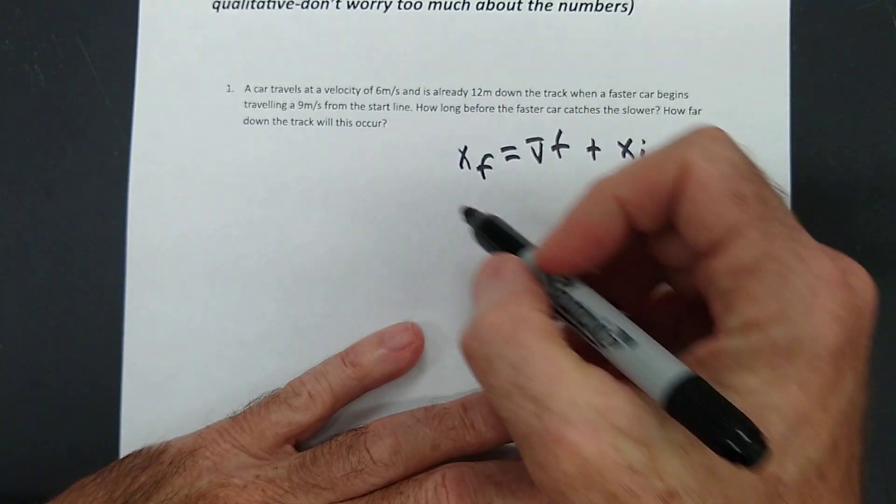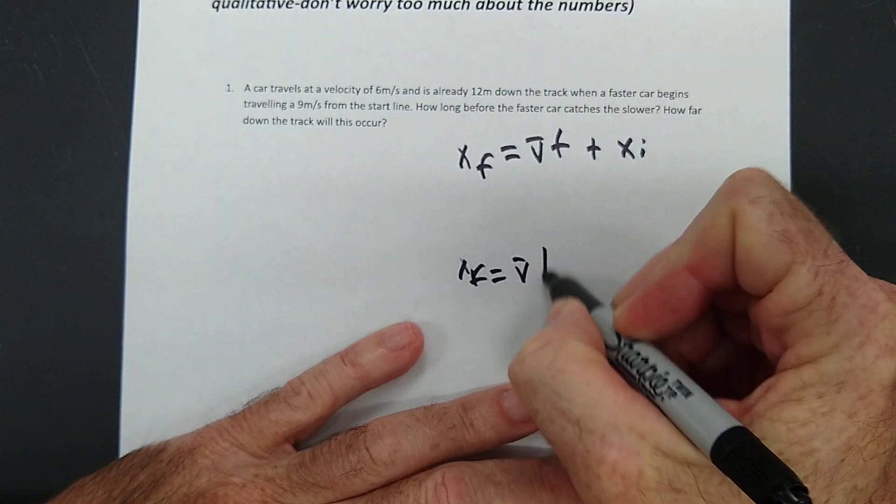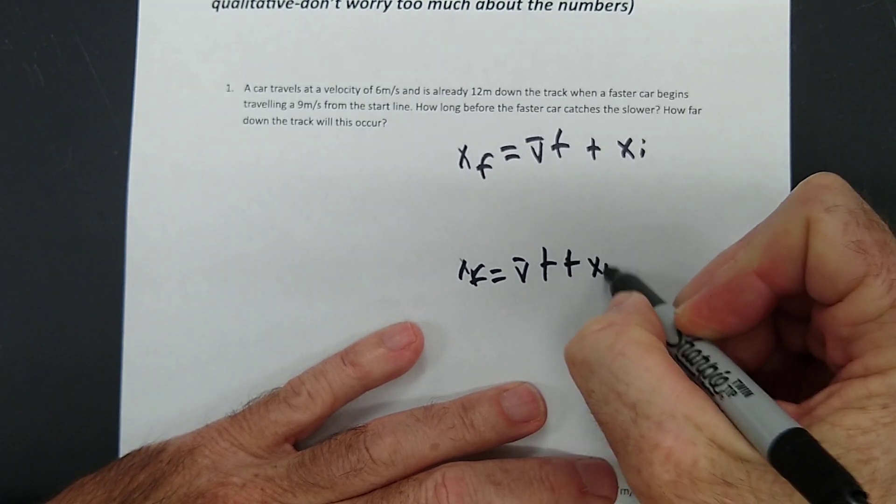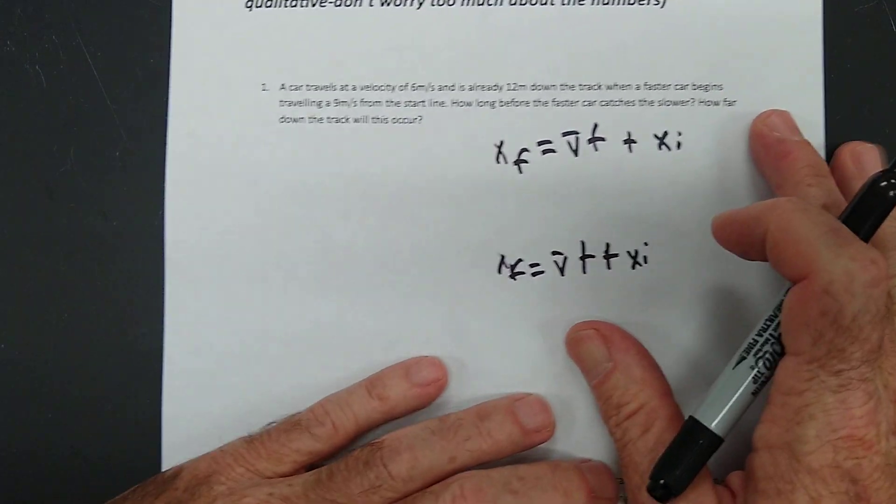We're going to do a formula for the first car, and then we're going to do a formula for the second car. And then we're going to set them equal to each other and solve for T. All right, here we go. Let's try it.